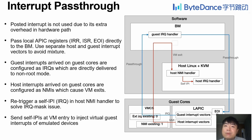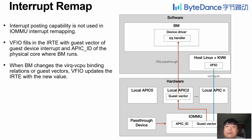In addition, we re-trigger a self-IPI in the host NMI handler to solve the IRQ mask issue. To inject a virtual interrupt into guests, we only need to send a physical self-IPI and VM entry, since the physical local APIC has pass-through to the VM. After introducing interrupt pass-through, the interrupt remapped logic for pass-through devices is also changed. We directly fill the IRTE in IOMMU hardware with the guest vector of the guest device interrupt and the APIC ID of the physical core where the VM runs. Thus, the interrupt of the pass-through device, configured as ILQ type, can be directly delivered to non-root mode where the VM runs.